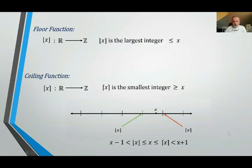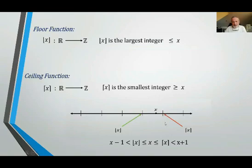Looking at the sketch here, if x is between two integers, the ceiling function is this point up here and the floor function is this point down here. The floor function has two brackets underneath it and the ceiling function is on top. x lies between the floor function of x and the ceiling function of x. The floor is less than x plus one, and the ceiling is greater than x minus one.